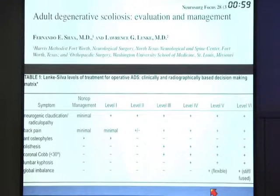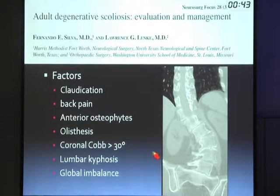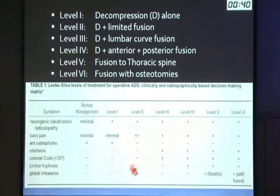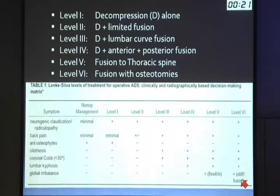A paper by Silva and Lenke gives guidance on how to address these patients. If they have claudication, back pain, osteophytes, spondylolisthesis, coronal curve, or kyphosis, the level of treatment varies: claudication alone may only require decompression; decompression with back pain may indicate a limited fusion; a lumbar curve should probably be corrected. For someone with global imbalance and lumbar kyphosis, fusion to the thoracic spine probably with osteotomies is needed. This study provides guidance on how to manage the different pathologies.